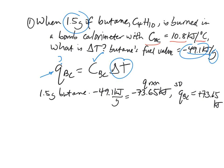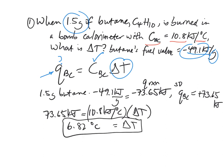So now we have our q of the BC. 73.65 kilojoules equals 10.8 kilojoules per degree Celsius times delta t, which is the one thing we don't know. So delta t will simply equal 73.65 divided by 10.8, and that's around 6.82 degrees Celsius. So that's one of the types of problems you'll encounter with a bomb calorimeter. Fairly straightforward, just trying to find delta t, but having to use grams in advance.